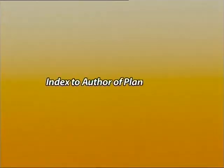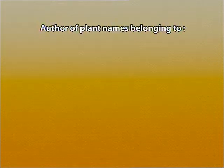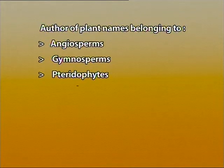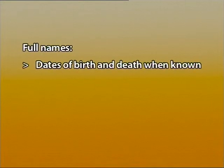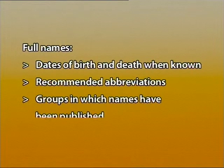One more aid is Index to Authors of Plant Names. Since scientific names are given by different taxonomists, there must be an index of all scientific names along with their authors. This monumental work was published by Brummitt and Powell in 1992 from Royal Botanic Gardens, Kew. It is basically an index of authors of plant scientific names, including authors of plant names belonging to angiosperms, gymnosperms, pteridophytes, bryophytes, algae, fungi, and fossil plants. It includes full names, dates of birth and death when known, recommended abbreviations, and groups in which names have been published for each author.